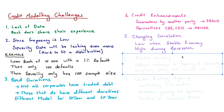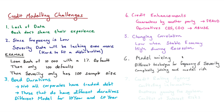Credit modeling also becomes complicated through model mixing, where people use different techniques for frequency and severity and then try to join the two together — multiplying them or combining them in some way. This can introduce model risk, and if the models operate in different dimensions, you may not even be able to fit the data together.